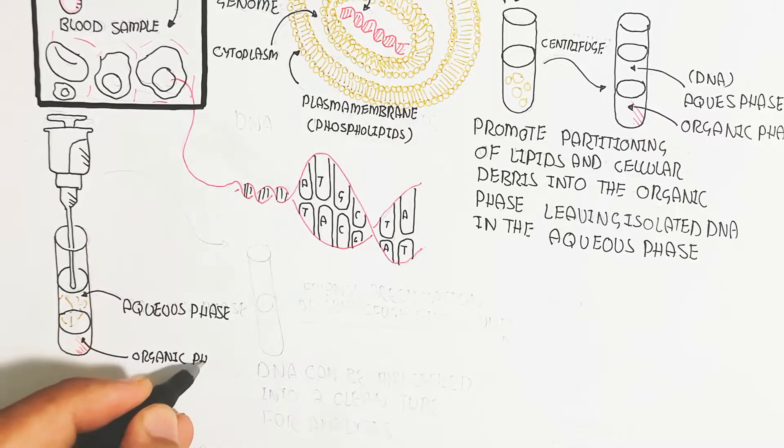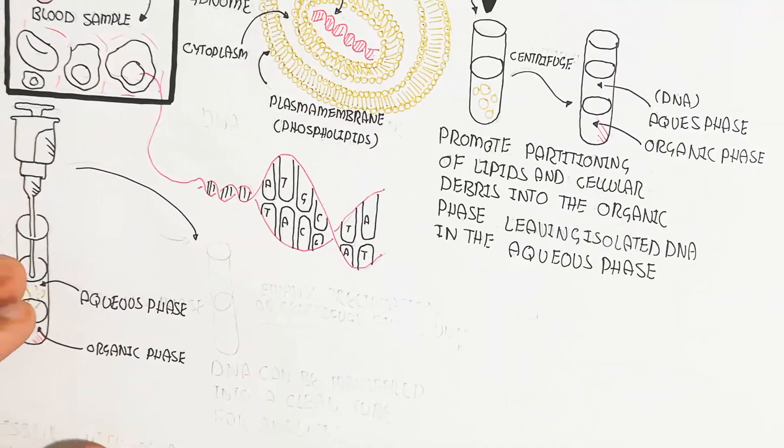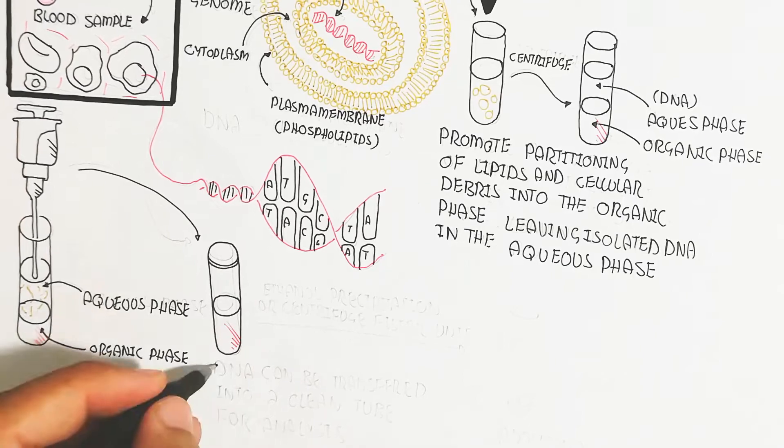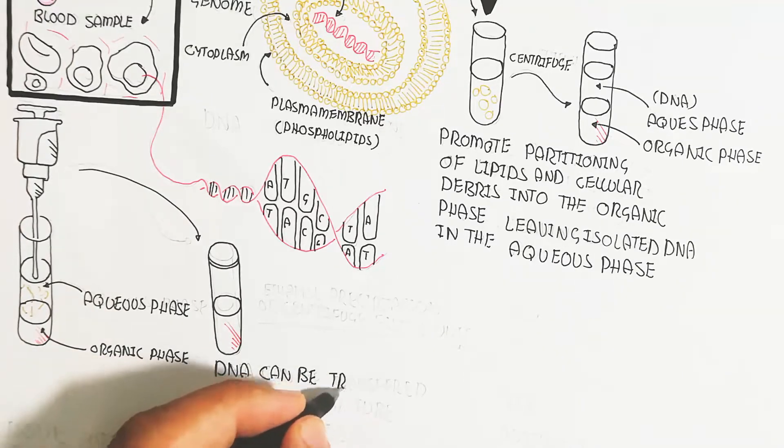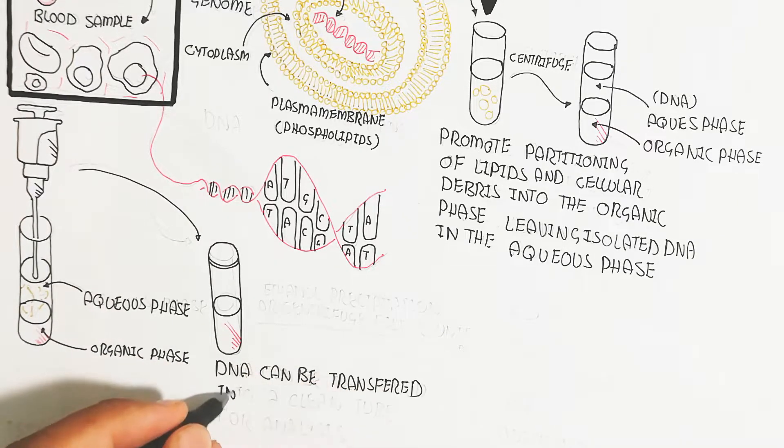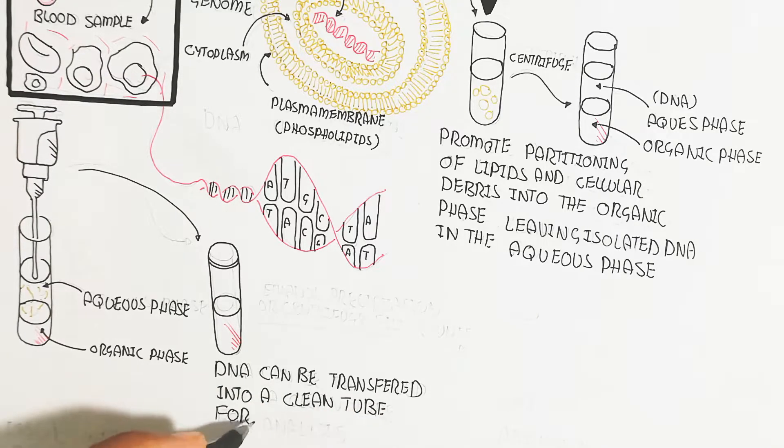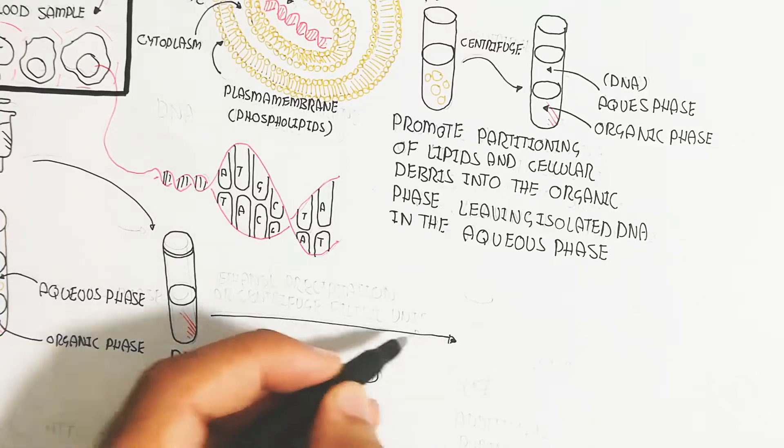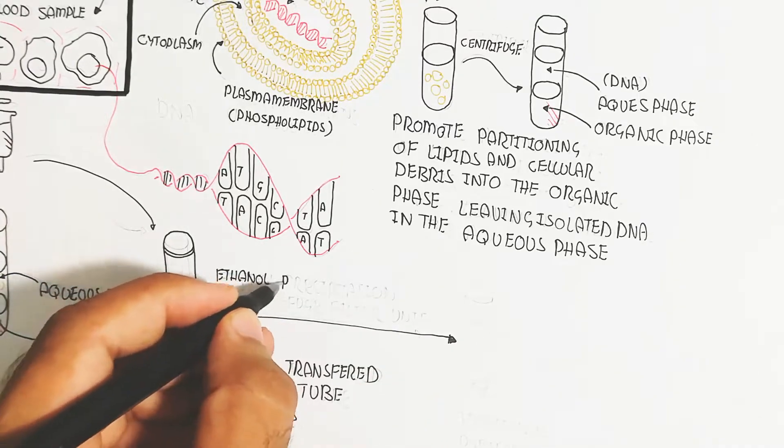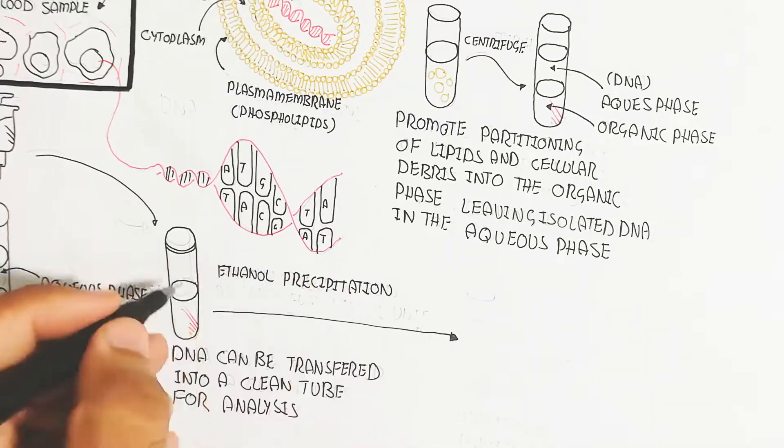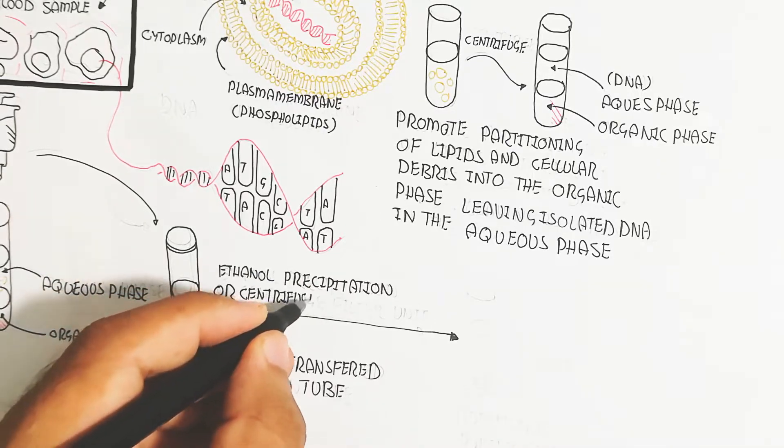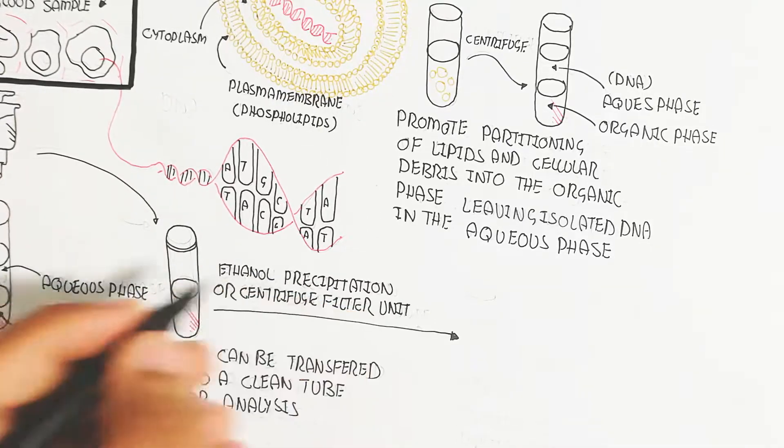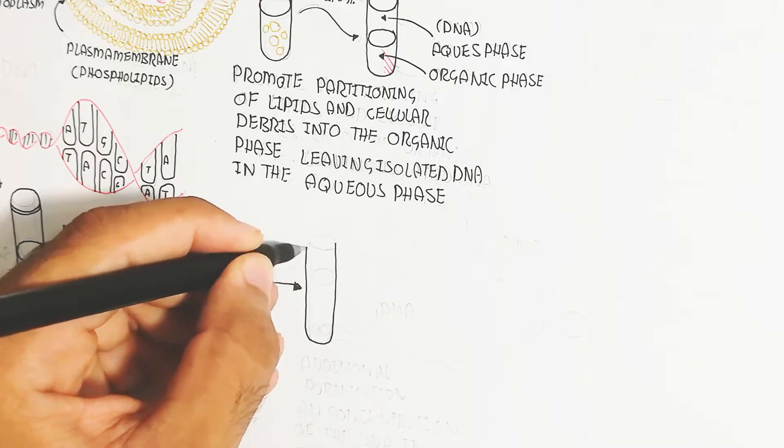The aqueous phase will be separated. After this separation, the DNA can be transferred into a clean tube for analysis. We will add further ethanol precipitation or centrifuge filter unit for additional purification and concentration of the DNA in the sample.